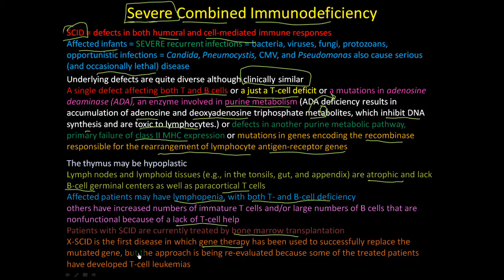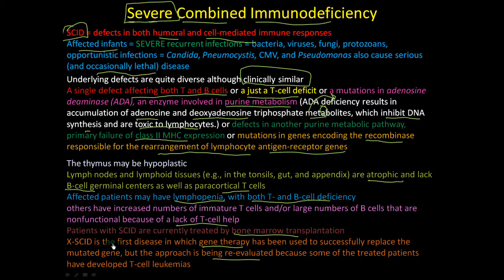However, gene therapy is being re-evaluated because most patients develop T cell leukemias. This is thought to occur because the inserted gene is located near an oncogene, which gets turned on to create more T cells, resulting in leukemia. This remains an active area of research.